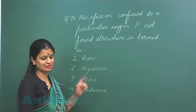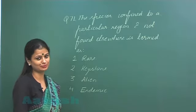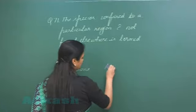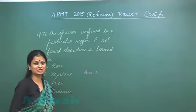Now, endemic species. The endemic species, they are the one which are present, which are confined to a particular region. So the right option is option number four. So let's move on to the question number 72.